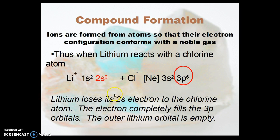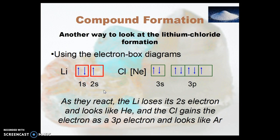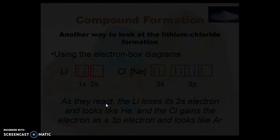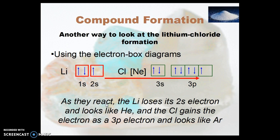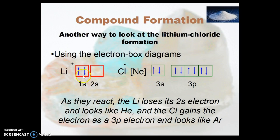The outer lithium orbital is empty. Now, if we use the electron box diagrams, we can show the same thing. The 2s electron is lost to the chlorine's 3p. And again, we have a plus charge on the metal ion and a negative charge on the chlorine, which is now chloride.